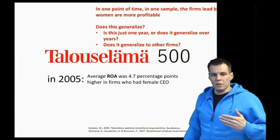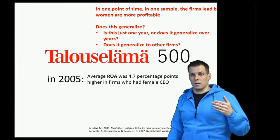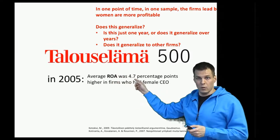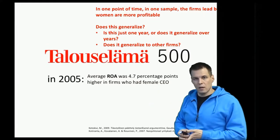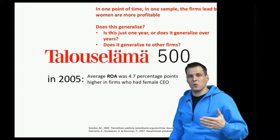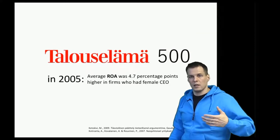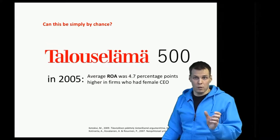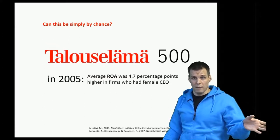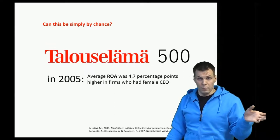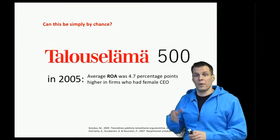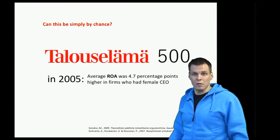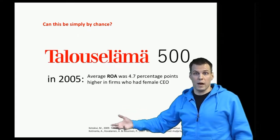The first question we need to ask when discussing generalizability of a sample statistic — something calculated as a number from a sample — is whether it generalizes to the population. We have to ask: could this be by chance only? Is it plausible that because of sampling variation, the companies led by women just happened to have a better year? Could it be a random occurrence, or is it evidence of a systematic difference?